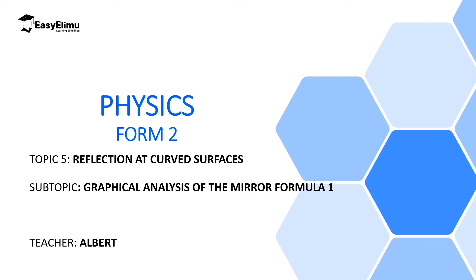Welcome to ECLIMU Learning Simplified and welcome to this lesson. In the previous lesson we discussed the mirror formula: 1 over f equals 1 over v plus 1 over u. Here, f is the focal length of the mirror, v is the image distance, and u is the object distance. We also discussed that you can use this formula to determine the nature of the image being formed.